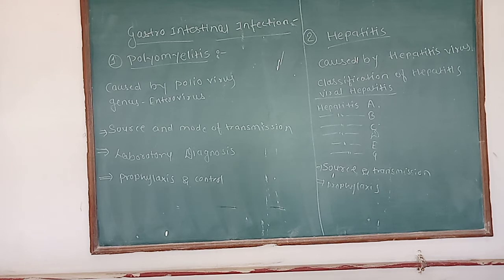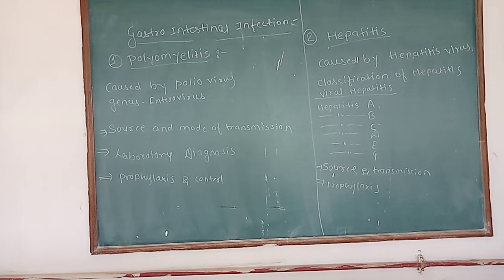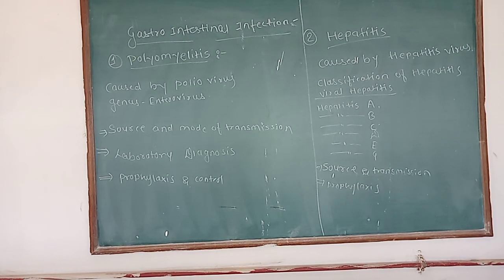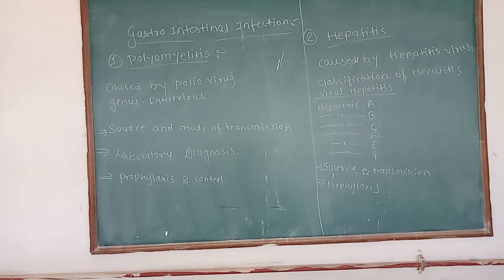To summarize hepatitis A: we saw the definition of hepatitis, then the types, the causative factor which is hepatitis virus, the classification of viral hepatitis into types A, B, C, D, E, and G — though we discussed only A and B. Hepatitis A is called infectious hepatitis. We covered the incubation period, mode and source of infection, and laboratory diagnosis. Now we move to hepatitis B, also called serum hepatitis.